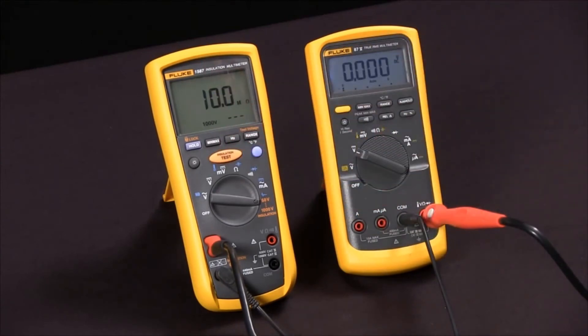Keep in mind that insulation resistance values vary with temperature and humidity. And that's how we measure insulation resistance with our Fluke 1587 Multimeter.